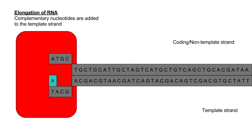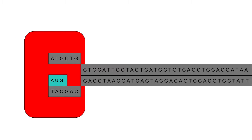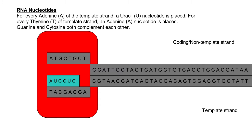When the RNA polymerase begins transcription, it unwinds one end of the DNA. The RNA polymerase then reads one of the strands of the unwound DNA called the template strand. The other strand is called the non-template or coding strand. Complementary RNA nucleotides are added to the DNA nucleotides of the template strand as it is read. The adding of complementary nucleotides is called elongation of RNA. Adenine is paired with uracil, thymine with adenine, guanine with cytosine, and cytosine with guanine.